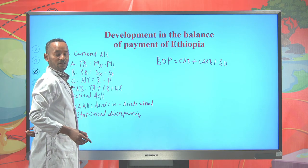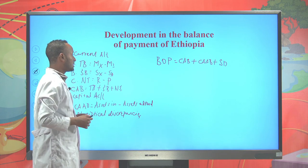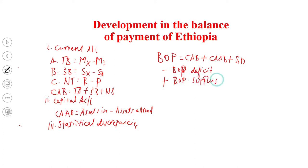After calculating the balance of payment by adding the current account balance, the capital account balance, and statistical discrepancies: if you get a negative value, the BOP is said to be a deficit; if you get a positive value, it is a BOP surplus; and if you get zero, the BOP is said to be balanced.